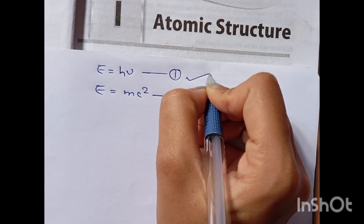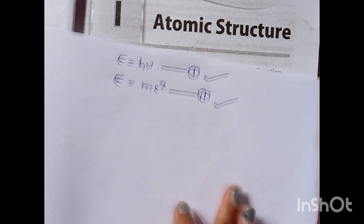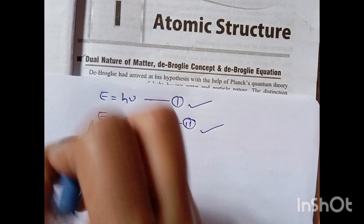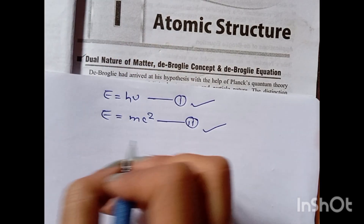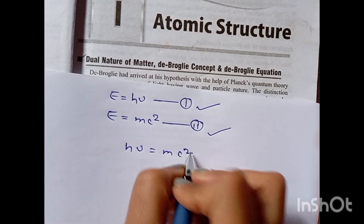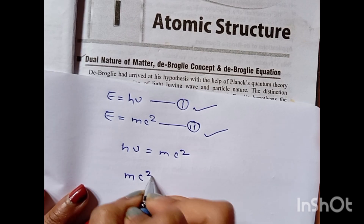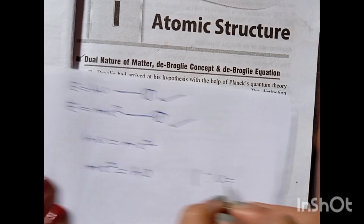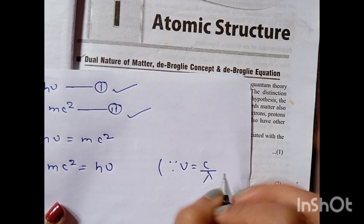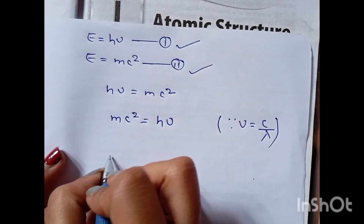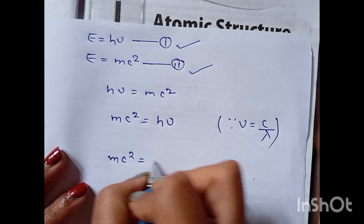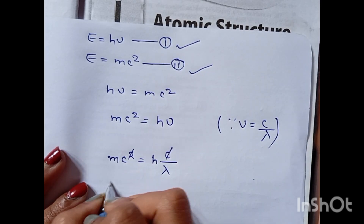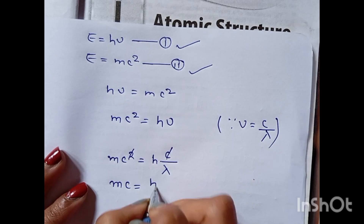Our first equation is Planck's and the second is Einstein's. Since both equal E, we set hν = mc². Now, since ν = c/λ, substituting gives mc² = hc/λ. Cancelling c from both sides: mc = h/λ.